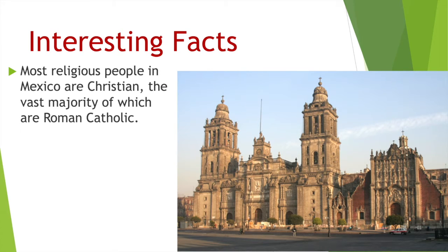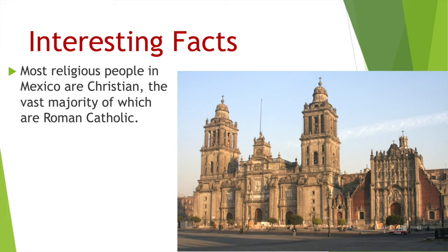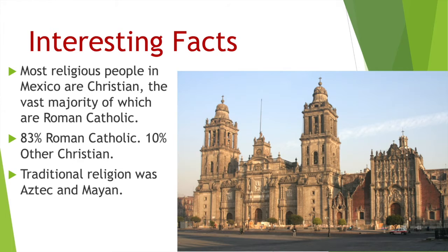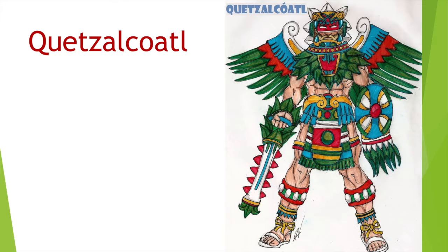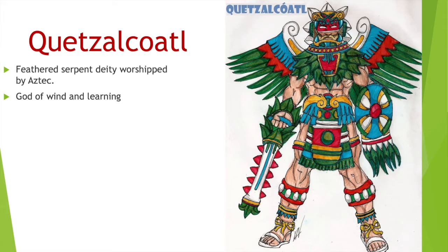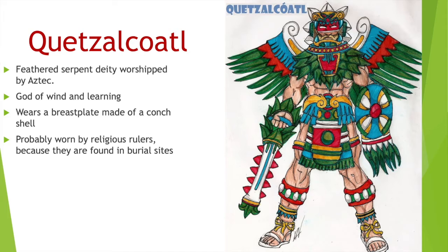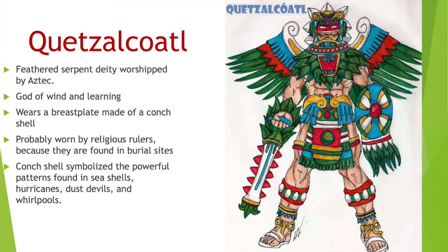Most religious people in Mexico are Christian, and the vast majority of those are Roman Catholic. The traditional religion was the Aztec and Mayan religions. Quetzalcoatl is a really interesting part of Mexican traditional religion — he was a feathered serpent deity worshipped by the Aztec, the god of wind and learning. He wears a breastplate made of conch shells, which were probably worn by religious rulers, as they've been found in burial sites. The conch shells symbolize the powerful patterns found in the ocean.